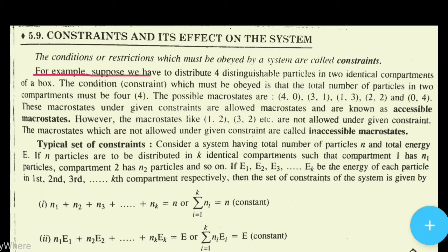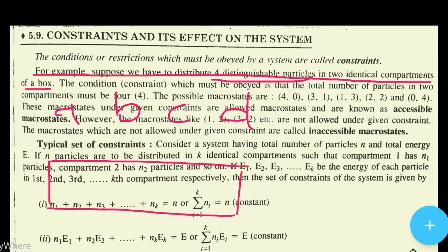For example, suppose we have to distribute four distinguishable particles in two identical compartments of a box. We have four different particles: the first particle is A, the second is B, the third is C, and the fourth is D. And we have to divide them into two identical compartments in the same box.